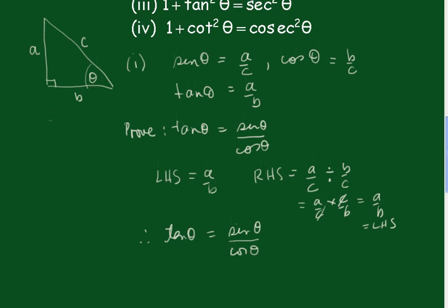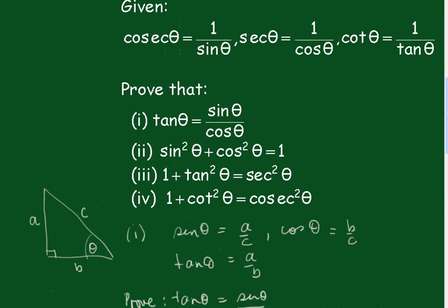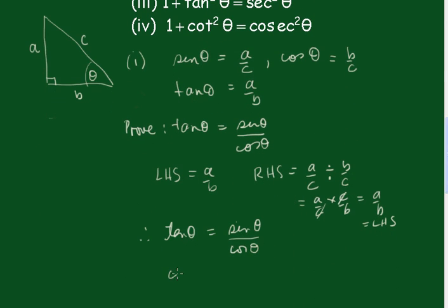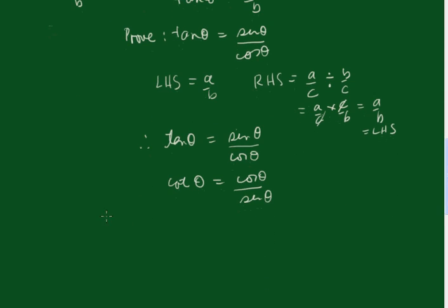Now, since cot θ equals 1 over tan θ, we also see that cot θ is equal to cos θ over sin θ. In part two, we have to prove that sin²θ plus cos²θ equals 1.